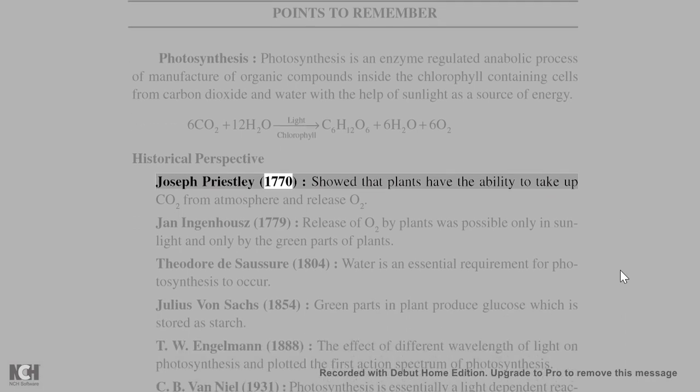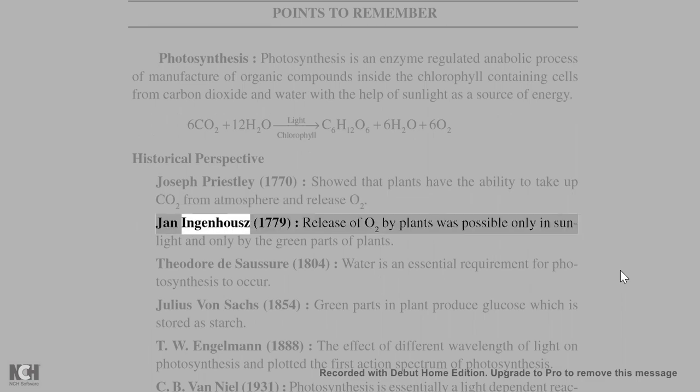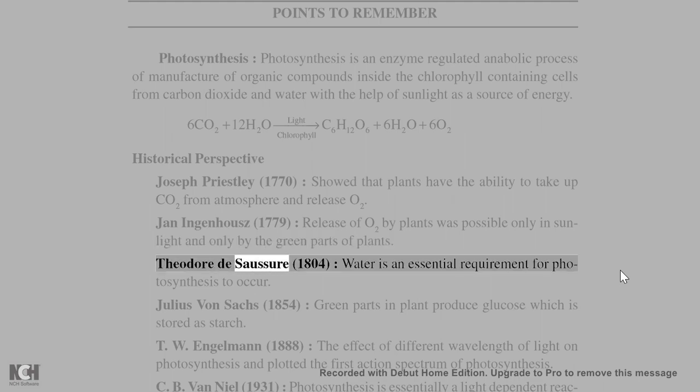Historical Perspective. Joseph Priestley (1770) showed that plants have the ability to take up CO₂ from atmosphere and release O₂. Jan Ingenhaus (1779): release of O₂ by plants was possible only in sunlight and only by the green parts of plants. Theodore de Saussure (1804): water is an essential requirement for photosynthesis to occur.